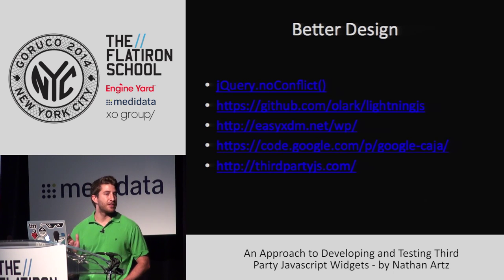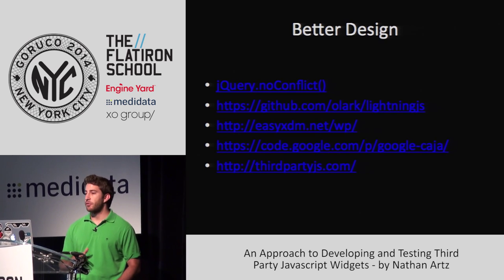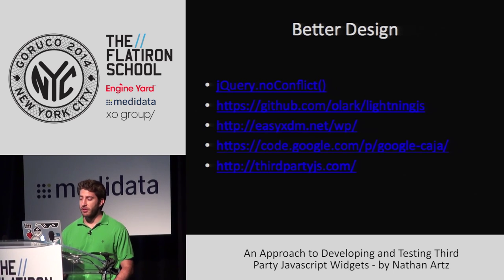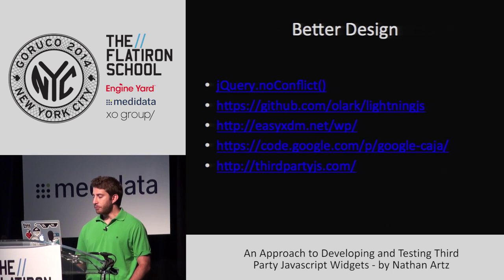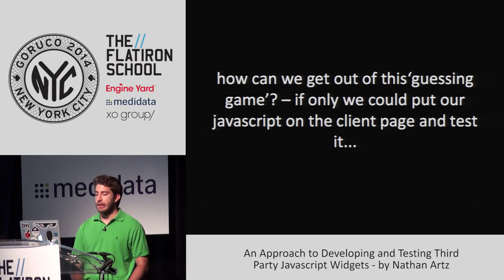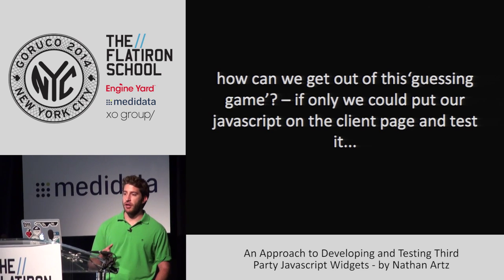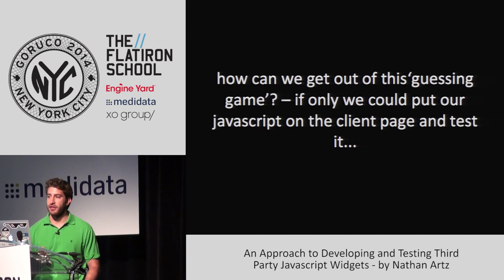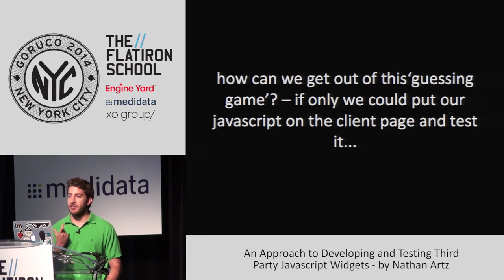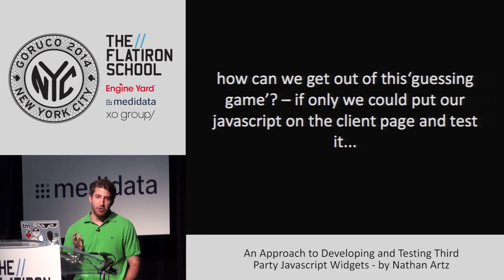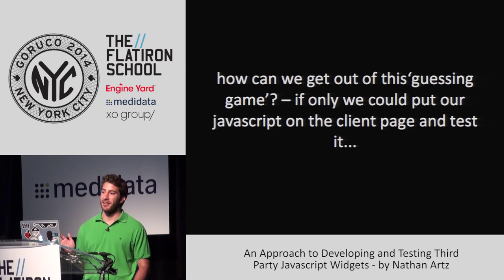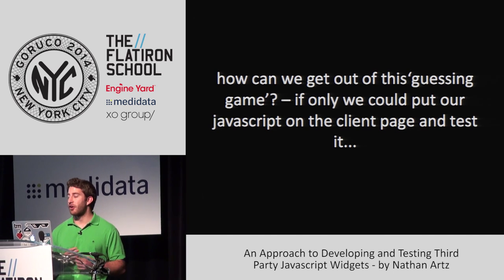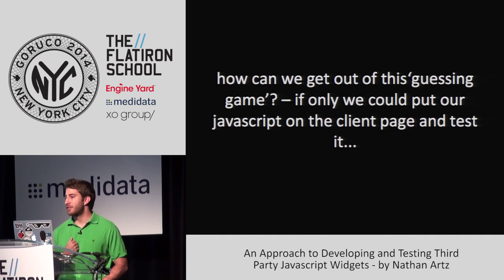Part of dealing with this is just having a better design and dealing with all these scope issues. There are actually libraries to help you with that — specifically Lightning.js and others. But that's not what we actually care about. We can always try to write better code, but what we really want is some sense of confidence that if I give this to a client, we know almost for a fact — assuming they don't screw anything else up — that it's going to work. Testing in our isolated test page just doesn't give me that confidence as a developer.